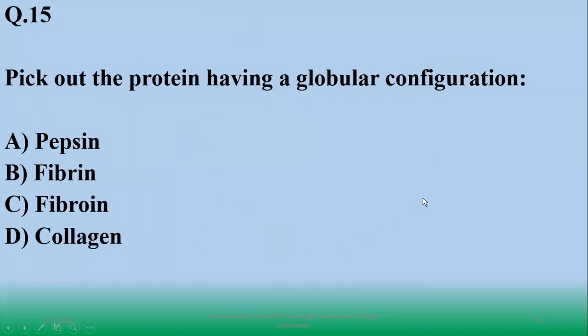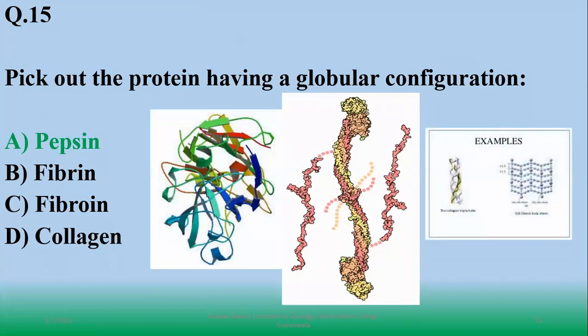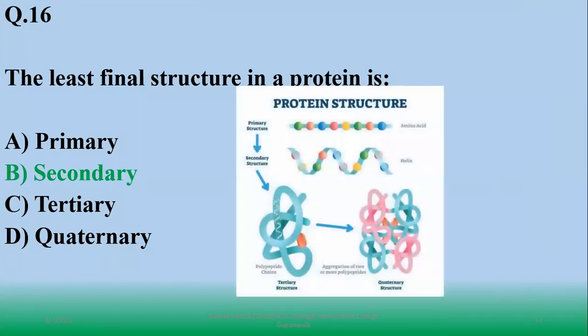Pick out the protein having a globular configuration. Globular proteins are tertiary or quaternary level proteins. Pepsin is an enzyme so it has globular configuration, jabki baaki tino - fibrin, silk protein and collagen - they are fibrous in nature. So right option is A, pepsin. The least final structure in a protein - protein has four structure levels. Least final structure is secondary. A protein is never having a primary structure as their final structure, but secondary structure can be final structure, so B.